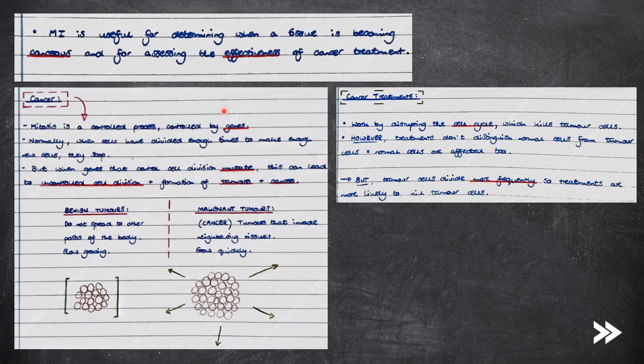There are two types of tumour: benign and malignant tumours. Benign tumours do not spread to other parts of the body and they grow slowly. Whereas malignant tumours are cancers, these are tumours that invade neighbouring tissues and grow quickly.